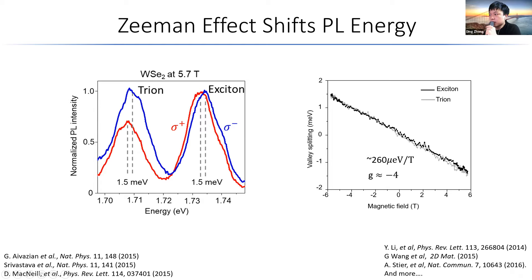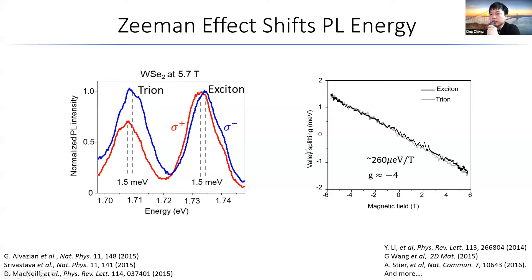A combination of them gives us a Zeeman effect with a slope of 260 μeV per tesla, which translates to g equals minus four—which is pretty good. As an example, comparing the photoluminescence for WSe₂ at 5.7 tesla versus zero tesla, we see a 1.5 meV shift in peak energy for both trion and exciton, coming from the Zeeman effect.